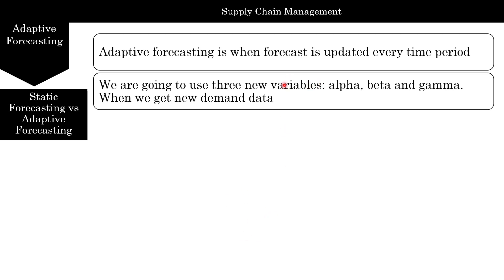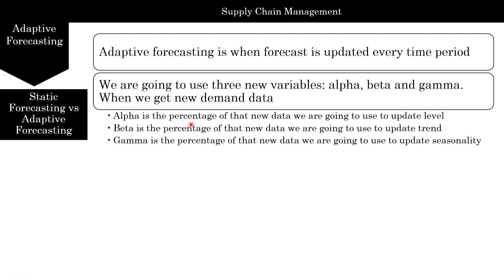For adaptive forecasting to change, we are going to learn three new variables we have not used before: alpha, beta, and gamma. Alpha corresponds to the level, beta corresponds to trend, and gamma corresponds to seasonality. When we get new demand data, alpha is the percentage of that new data we are going to update on level, beta is the percentage we use to update trend, and gamma is the percentage we use to update seasonality.